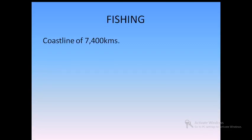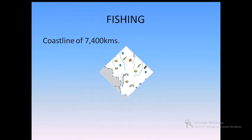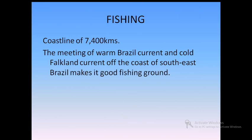The next occupation is fishing. Brazil has a coastline of 7,400 kilometers. Marine fishing is developed in Brazil. The South Atlantic Ocean is considered to be excellent for fishing because of the meeting of the warm Brazil current and the cold Falkland current — the confluence of these two currents makes it an excellent ground for fishing.